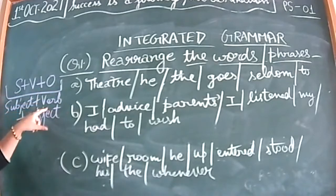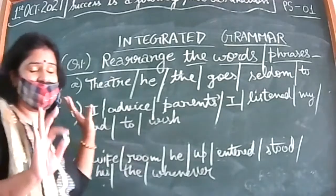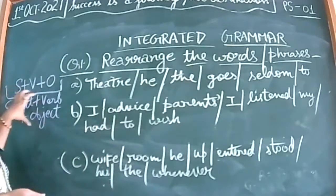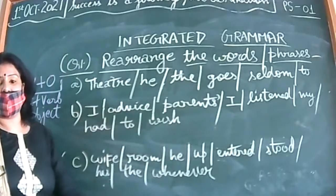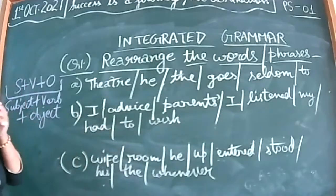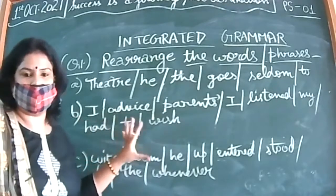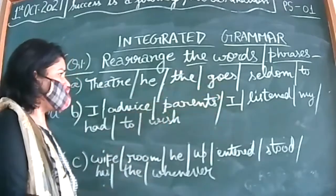Verbs are the action words and then object is upon which action has been performed. You have done this in class one, two, three — this is a kind of revision. When we try to rearrange the sentences in correct order, we have to keep in mind the correct SVO structure. Even so, sometimes you're not able to make up the sentence — you have to practice.